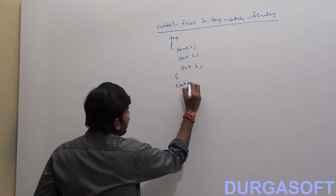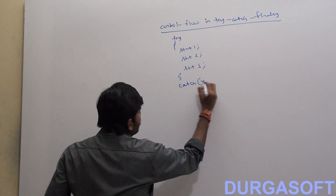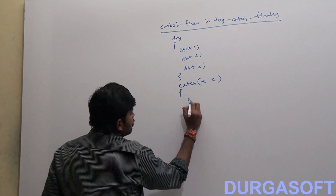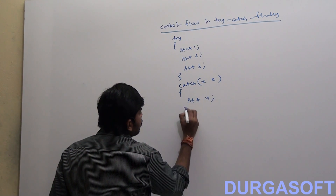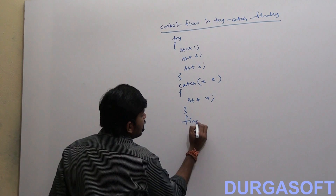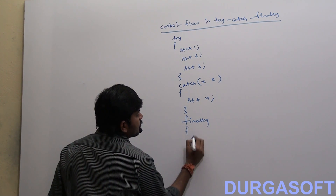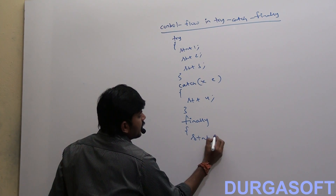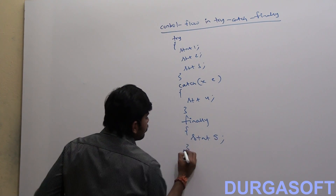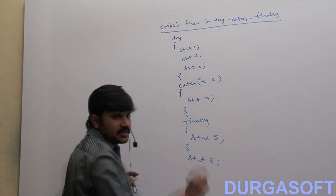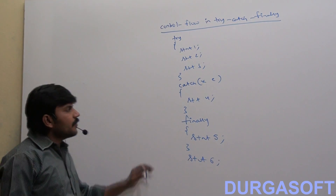Then there is the catch block containing Statement 4. After that, the finally block with Statement 5 and Statement 6.